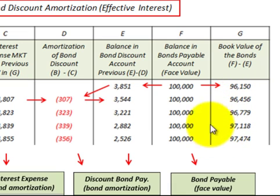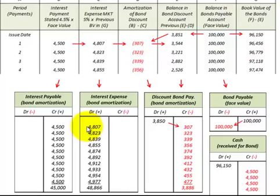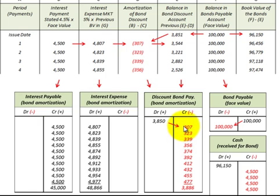We just continue on with those calculations until we get down to the payment date on the bond. Reviewing our journal entries: we have the interest payable amount based on the stated rate of interest — those steady payments — and then the interest expense recognized on the income statement, based on the market rate of interest times the carrying value of the bond each period. Then the discount on bonds payable is calculated by subtracting interest expense from interest payable, and that discount reduces — or increases — the book value of the bond.